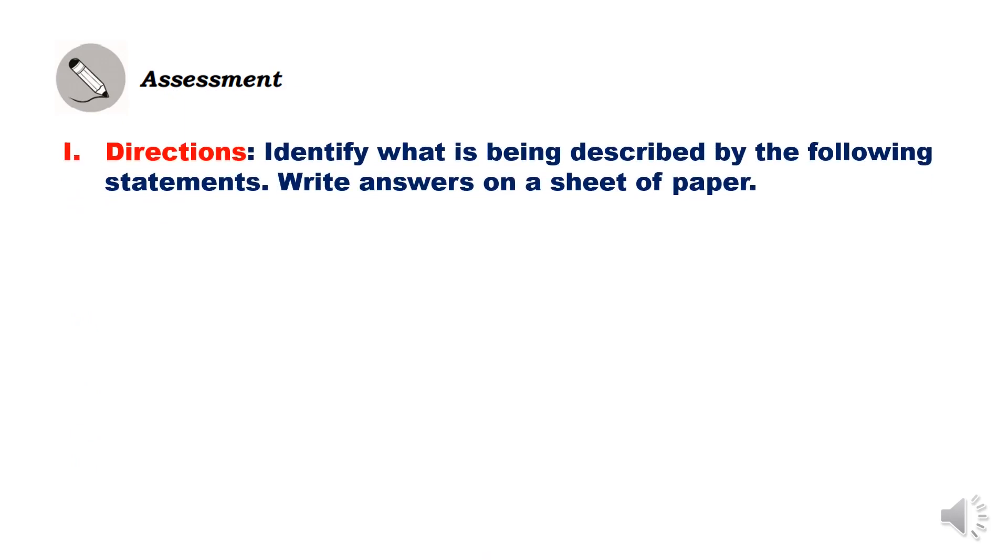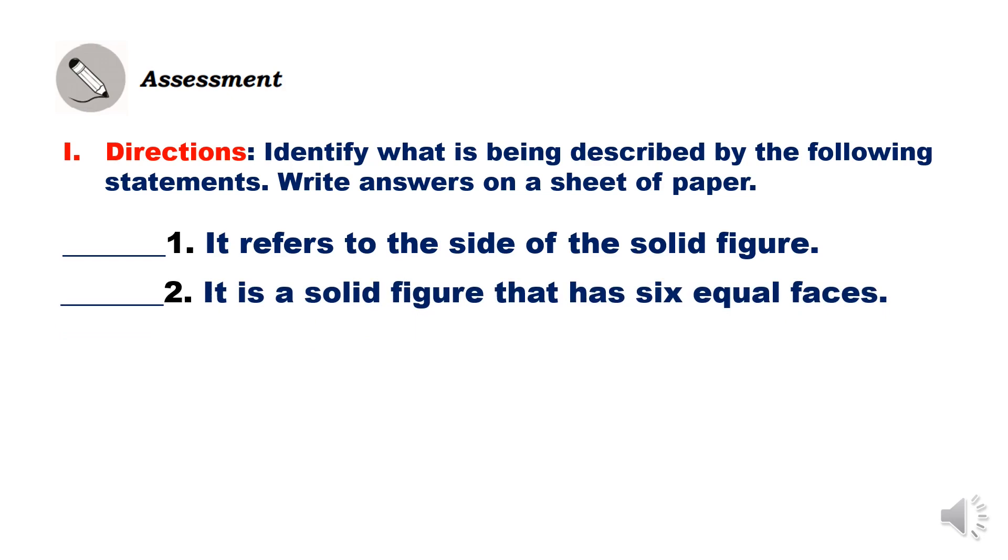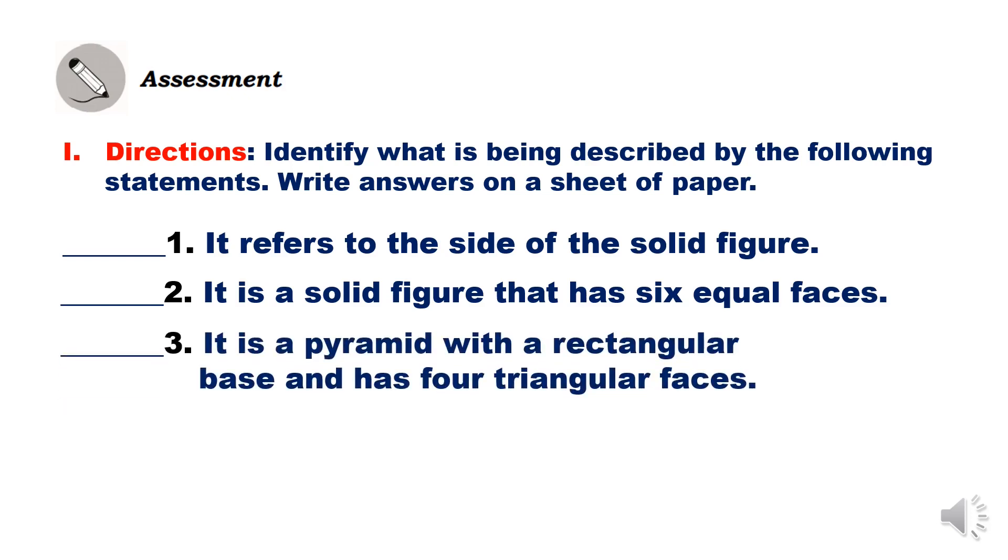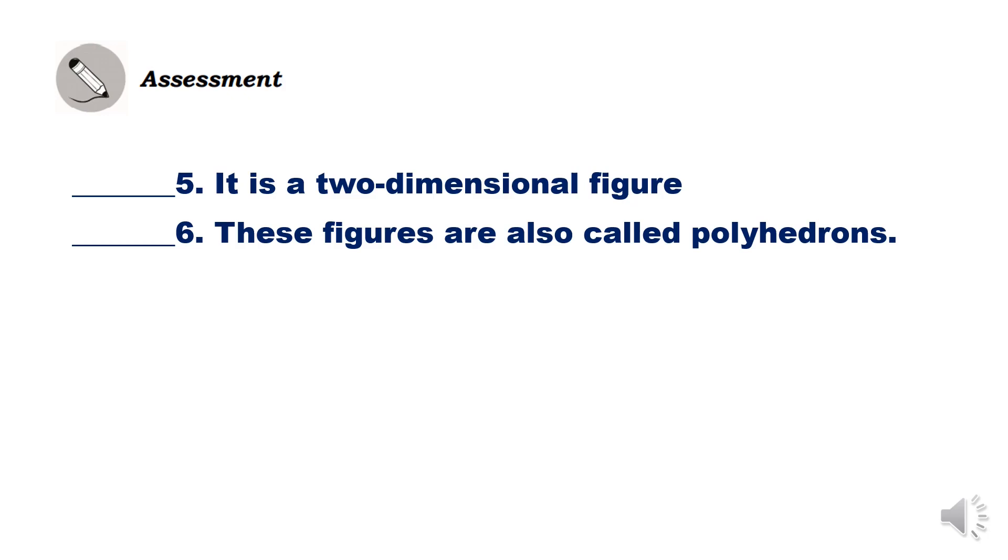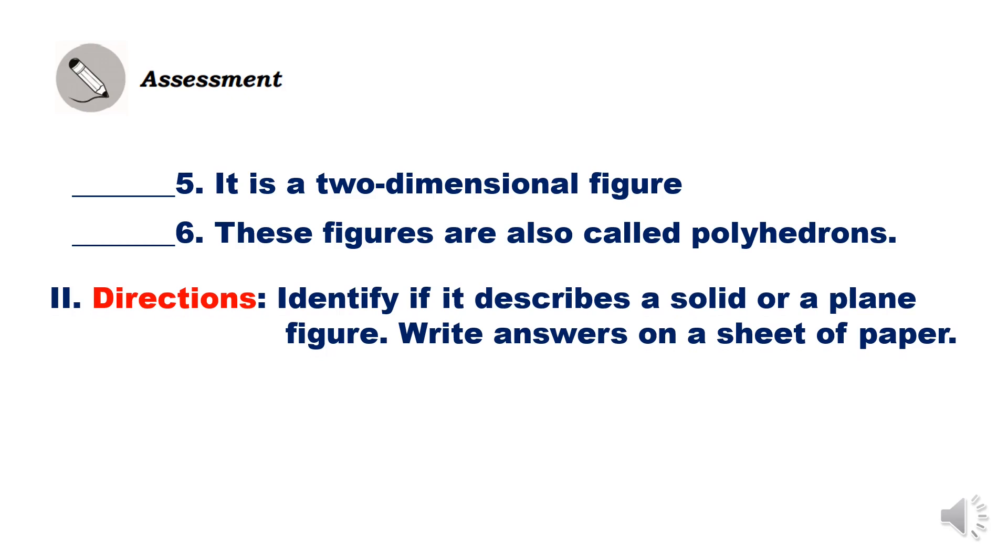Identify what is being described by the following statements. Write answers on a sheet of paper. Number 1: It refers to the side of the solid figure. Number 2: It is a solid figure that has 6 equal faces. Number 3: It is a pyramid with a rectangular base and has 4 triangular faces. Number 4: It is a 3-dimensional figure. Number 5: It is a 2-dimensional figure. Number 6: These figures are also called polyhedrons.